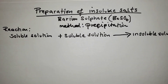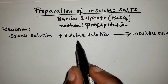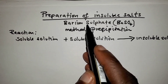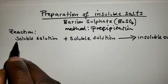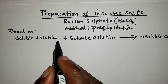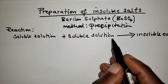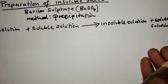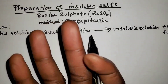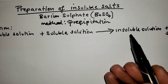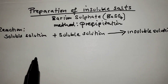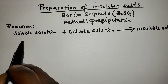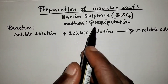The general format is: to prepare an insoluble salt, you need a soluble solution reacting with another soluble solution to form an insoluble product and a soluble solution. So you have three soluble solutions and one insoluble.